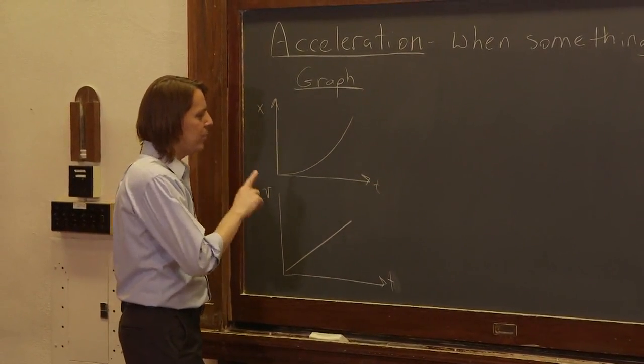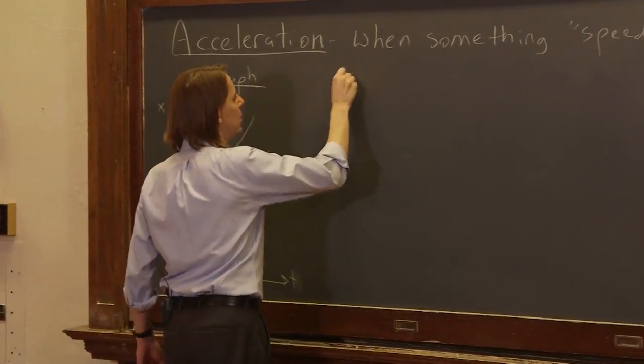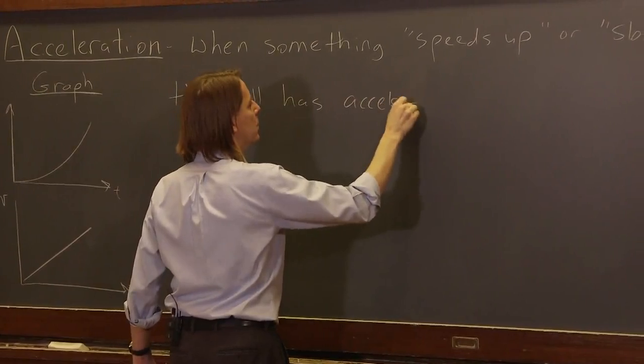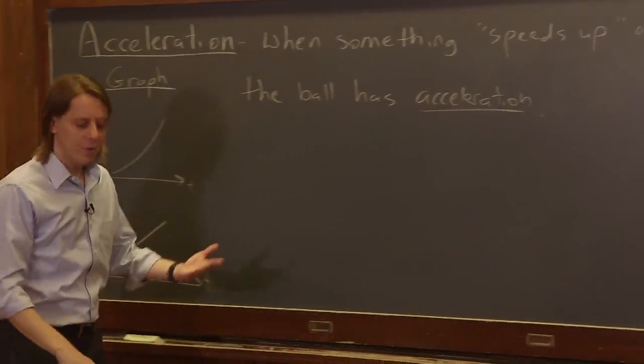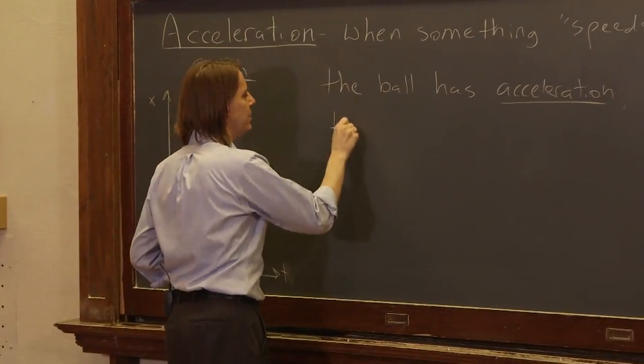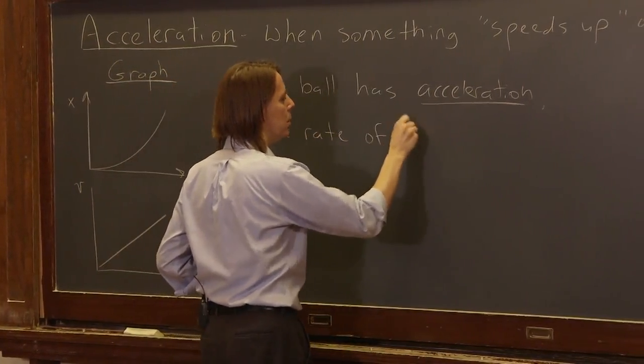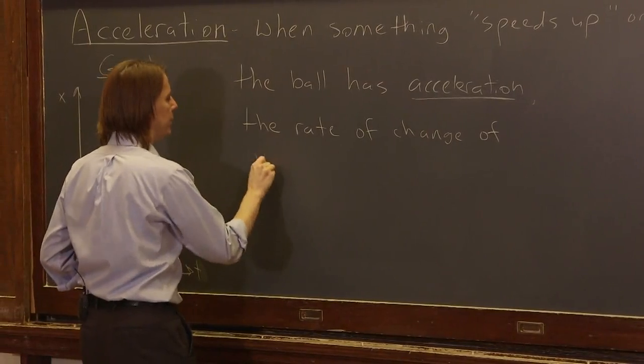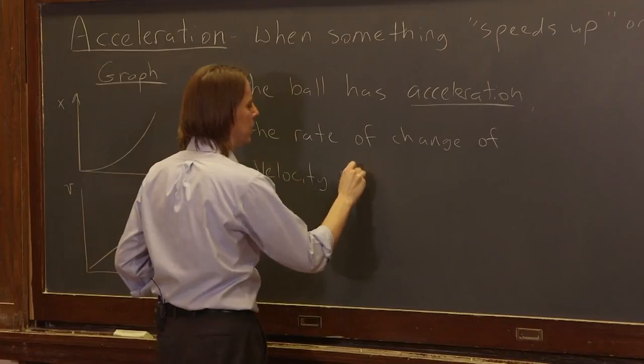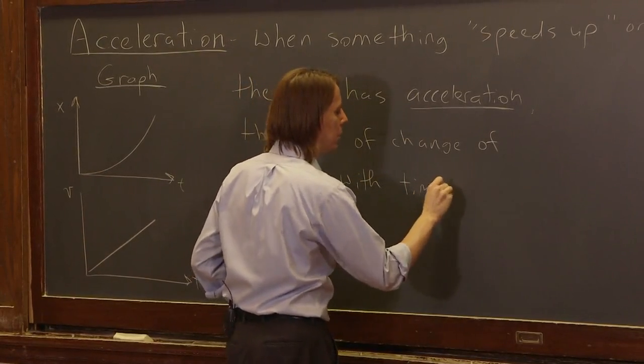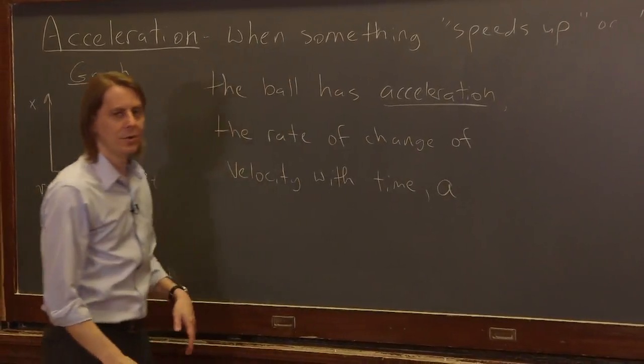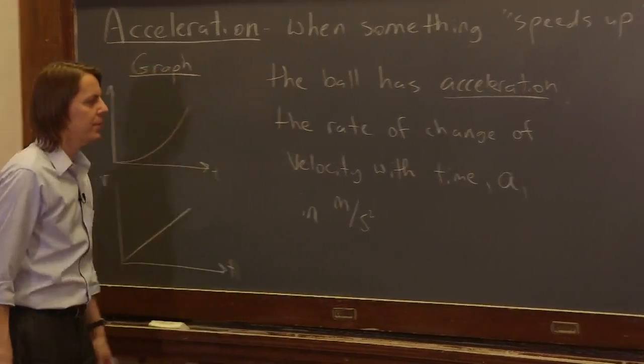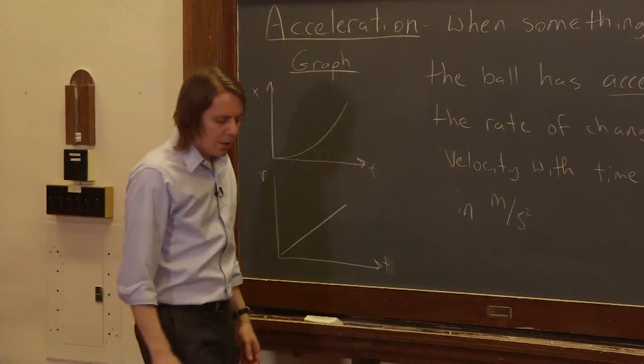And now for acceleration, let's go ahead and find it. The ball has acceleration. Just like we wrote before for velocity, it's the rate of change of something. In this case, it's the rate of change of velocity with time. And we use an A to describe acceleration. And we do it in meters per second squared is the unit, the MKS unit.